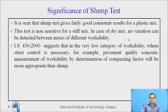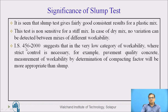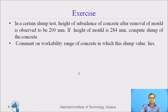The significance of this test: when the concrete mix is a plastic one, it will give a good and consistent slump value. If the mix is stiff, we will find that the variation is much less or almost zero. In such cases, when concrete is stiff, we cannot use the slump test for measurement of workability. IS 456 suggests that for such a low category of workability, we should go for the compacting factor test.